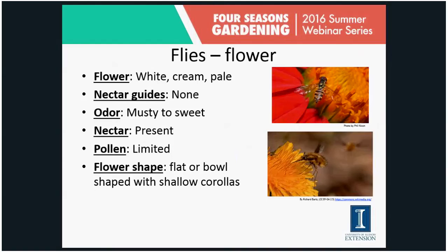Flower flies are attracted to flowers that are more white, cream, or pale in color. The odor is musty to sweet, and there is nectar because these flies are feeding on it. The flower shape is flat or bowl-shaped with shallow corollas. These include syrphid flies, hover flies, and bee flies — many of which mimic bees and wasps, so they'll visit flowers more attractive to those types of insects as well.